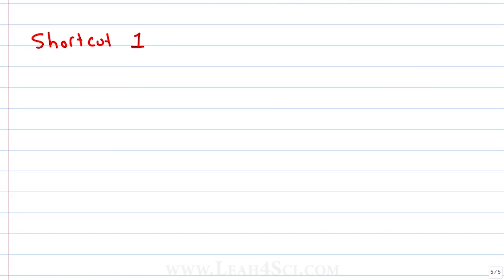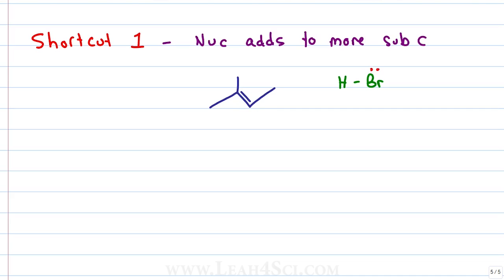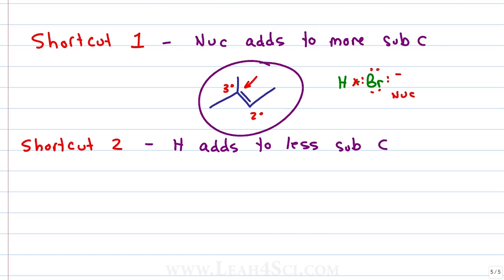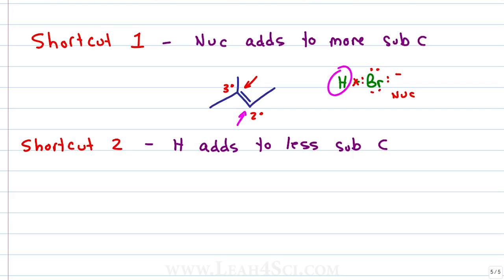The first shortcut is to recognize that the nucleophile adds to the more substituted carbon. In the case of hydrohalogenation, the intermediate has a bromide ion in solution — that's the nucleophile — and if choosing between a secondary and a tertiary carbon, it's going to add to the tertiary. Another way to remember this is that hydrogen adds to the less substituted carbon. Some students prefer this because the nucleophile changes and can be hard to recognize, but if you know you have a hydrogen, you always know where to put it.